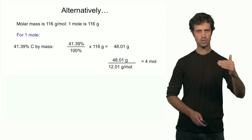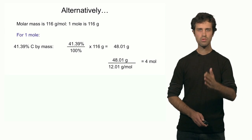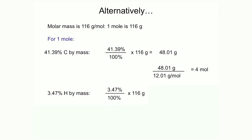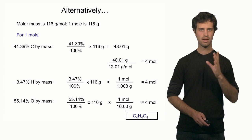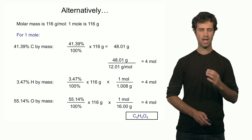I can do the same for hydrogen: 3.47% of 116 grams, divided by the molar mass of hydrogen, gives 4 moles of hydrogen. And for oxygen: 55.14% of 116 grams, divided by the molar mass of oxygen, gives 4 moles of oxygen. So I find 4 moles of carbon, 4 moles of hydrogen, and 4 moles of oxygen per mole of the compound. That means the molecular formula is C4H4O4.